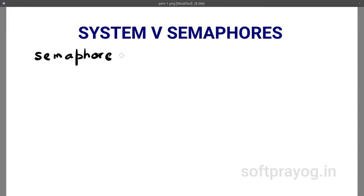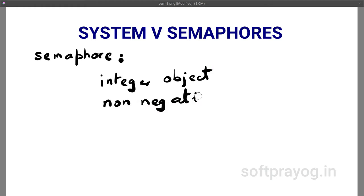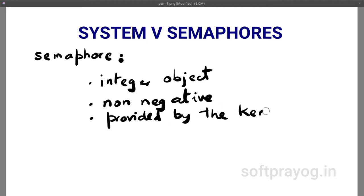Continuing with the definition of semaphores, we say a semaphore is an integer object — it has a value of type integer. Its value is non-negative; it can only be zero or positive. Semaphores are provided by the kernel because semaphores have a system-wide scope. A semaphore is visible to all processes and a process can operate on it, provided it has the permission to do so.